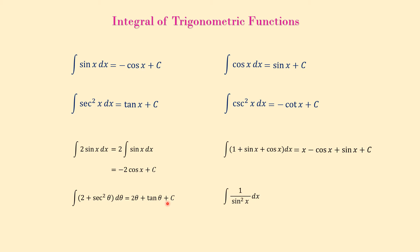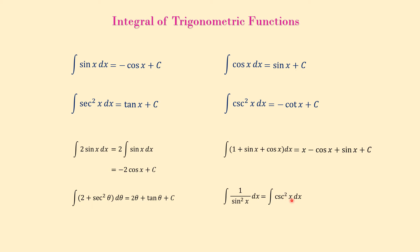Another example: we want to integrate 1 over sine squared of x. We have no direct formula for this, but from trigonometry we know that 1 over sine is cosecant, so 1 over sine squared of x is cosecant squared of x. We rewrite the integrand in that form, then use the formula: the integral of cosecant squared of x dx is negative cotangent of x plus C.